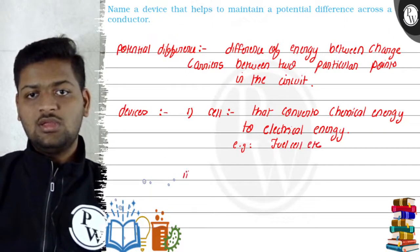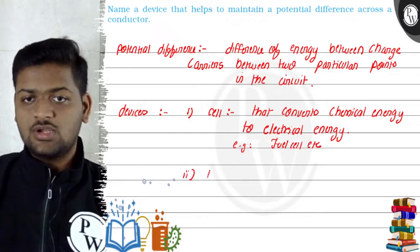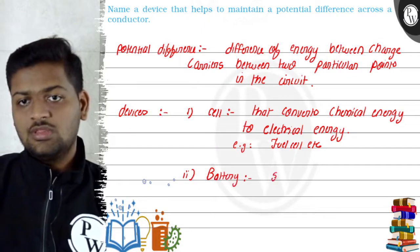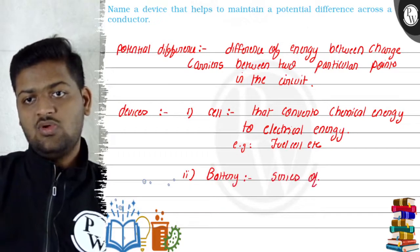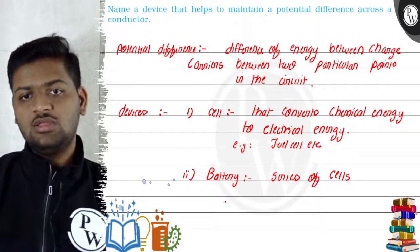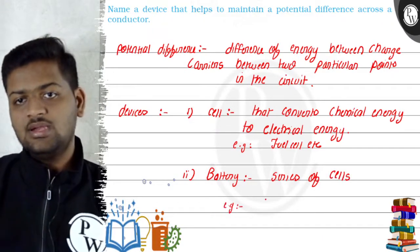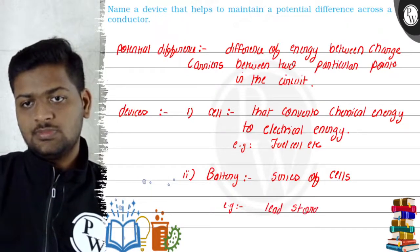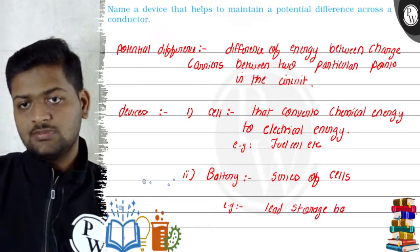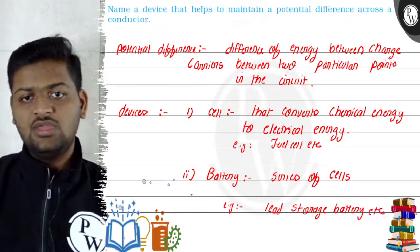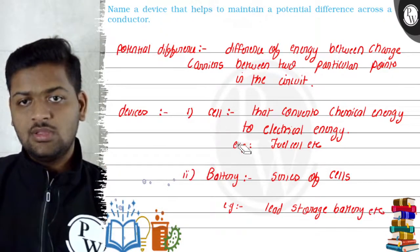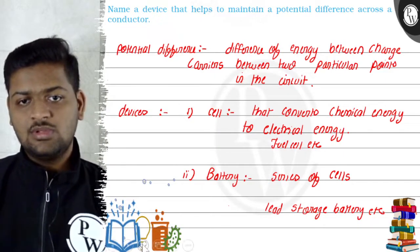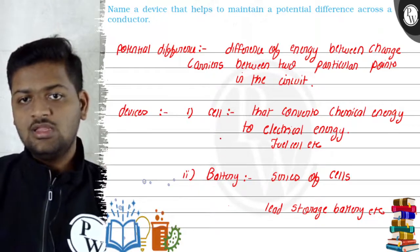The second device that we can use to maintain a potential difference across a conductor is a battery. A battery is nothing but a series of cells. An example of a battery is a lead storage battery.